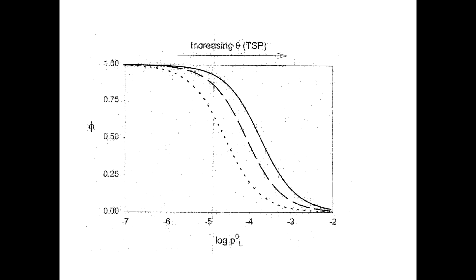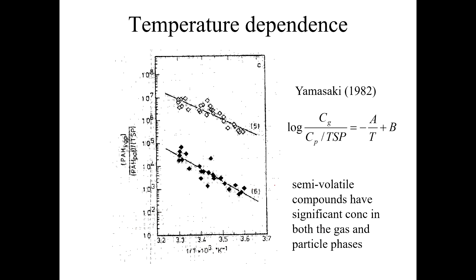Going back to a similar idea here, different way of saying the same thing. In this plot we have phi, which is the fraction on the particles. Now we have log of vapor pressure. The different isopleths here are increasing TSP, increasing total suspended particulate. You can see if you've got a low vapor pressure down here, then almost all of your chemical is absorbed, even if you only have a small amount of particles. But for chemicals with high vapor pressures, they need a lot of TSP. They need a lot of TSP for them to end absorbed.